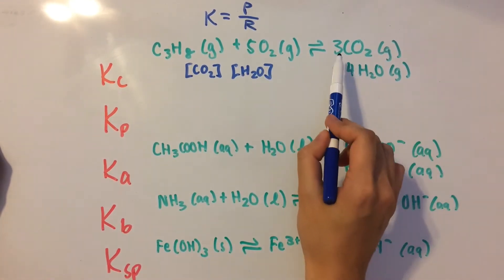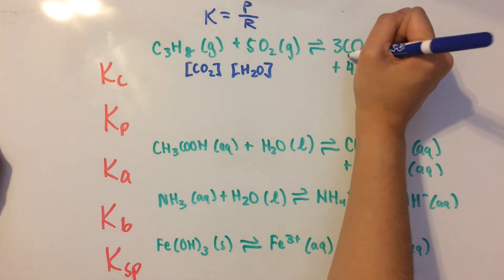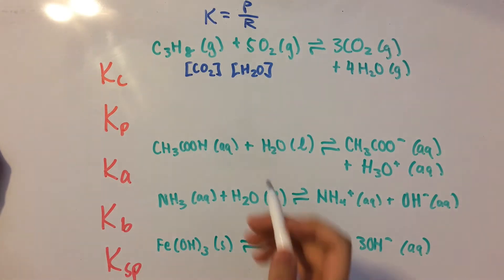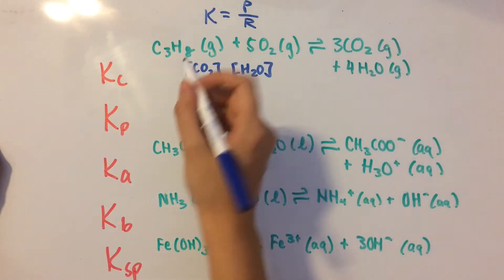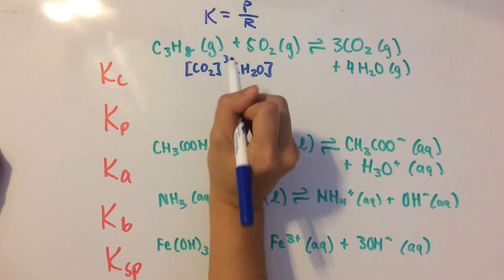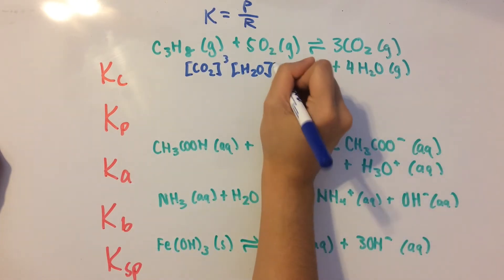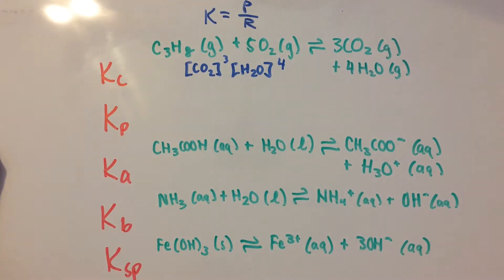Now, what we need to do is remember that the coefficients are what we're going to raise the concentration to the power of. So we have three moles of CO2, which we're going to turn into concentration of CO2 cubed. Same thing for here, we're going to raise it to the fourth power.